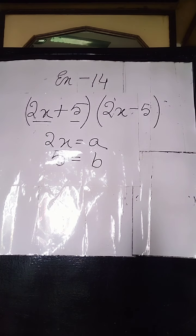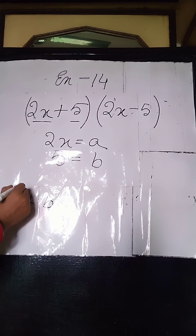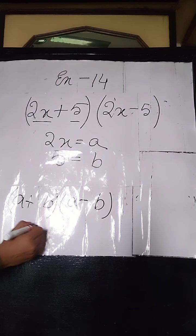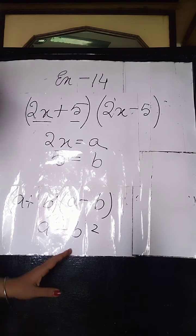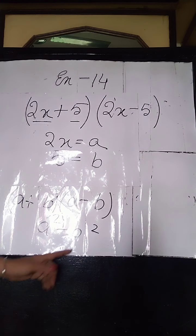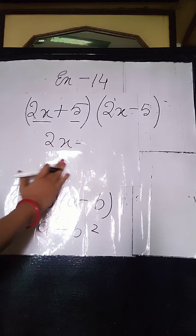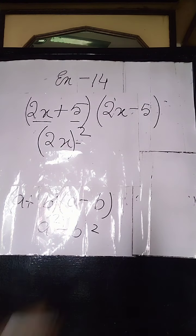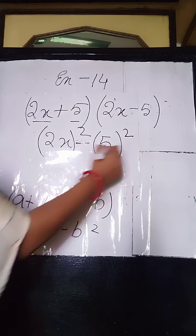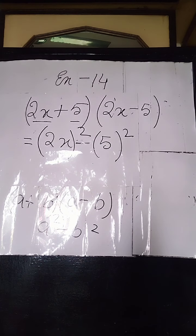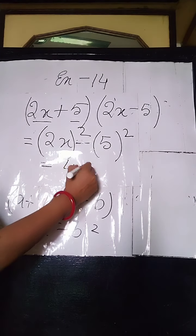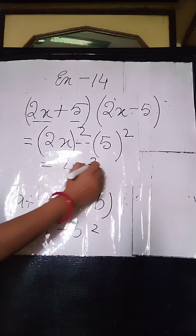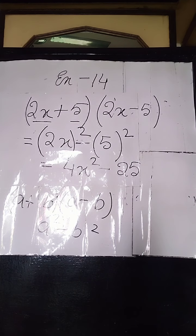Now we apply the formula A plus B into A minus B and write the result as A square minus B square — that is, the square of the first term minus the square of the second term. Here it will be (2x) whole square minus 5 whole square. Finally, we get 4x square minus 25, because 2x times 2x gives 4x square, and 5 times 5 gives 25. So 4x square minus 25 is the answer.